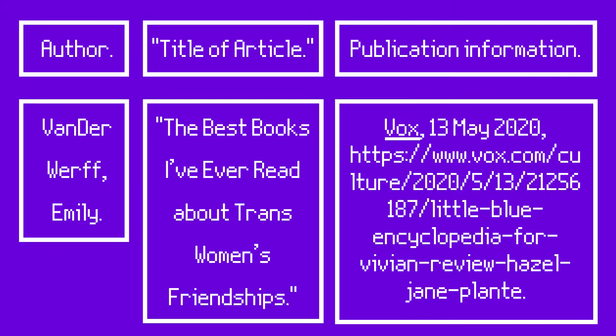Now we put all of that information into our citation pattern. Start with your author, last name first: Vanderwerf, comma, Emily, period. Then put in the title of your article, this time in quotation marks because it's the title of a short work: 'The best books I've ever read about trans women's friendships,' period. Then add your publication information, starting with your website title. Vox goes underlined because it's the title of a long work. Add a comma, then the date — 13 May 2020 — a comma, and then end with the URL address, with a period. When you put all of that together on your Works Cited page, it looks like this.